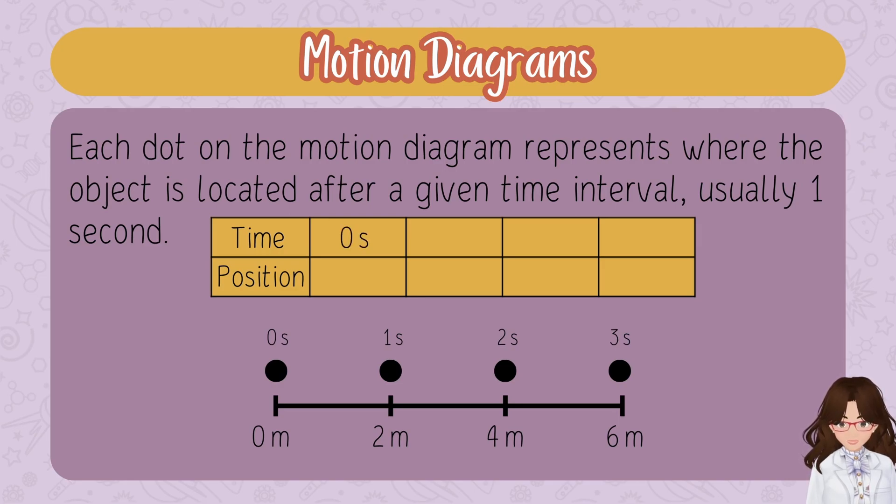Notice that at zero seconds, looking at the number line, the position is zero meters. At one second, it's located at two meters, at two seconds, four meters, at three seconds, six meters. So what a motion diagram gives you on the most straightforward level is position and time.